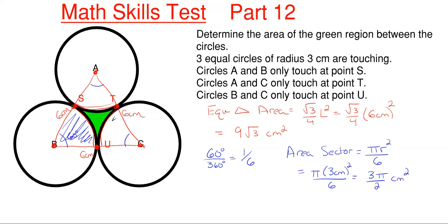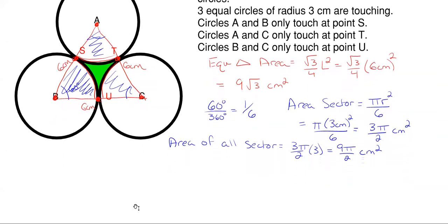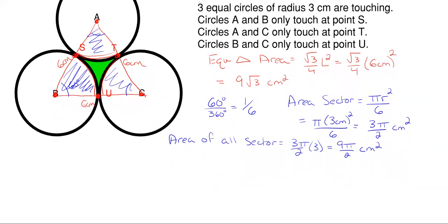Well, we actually have three of them because all of them are going to be equal due to the equilateral triangle. So the area of all my sectors will just be the 3 pi over 2 times 3, which gives me just 9 pi over 2 centimeters squared. So now we have the area in blue for each of these sectors, and we have the overall equilateral triangle, the total area in there.